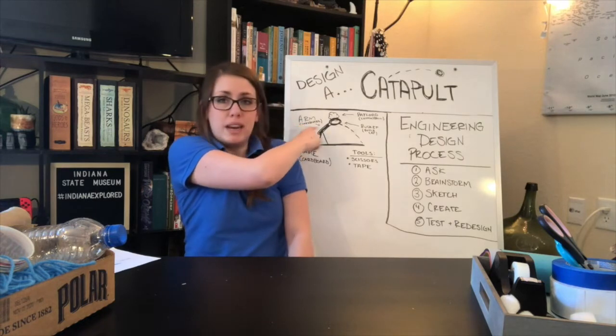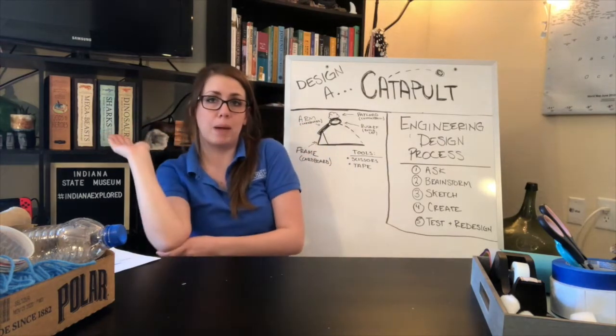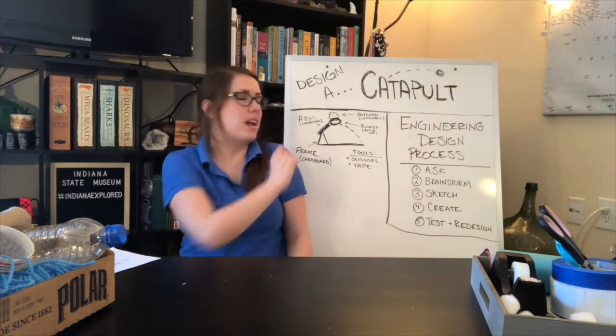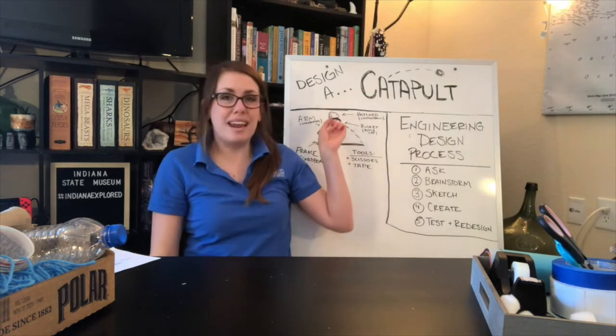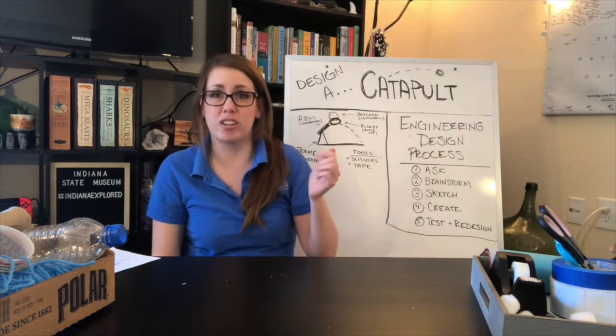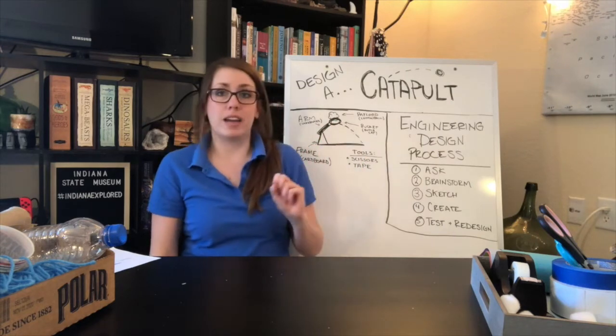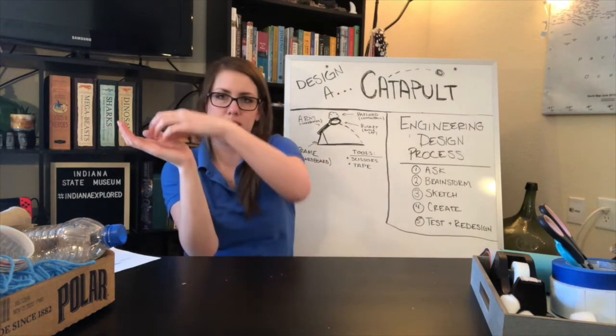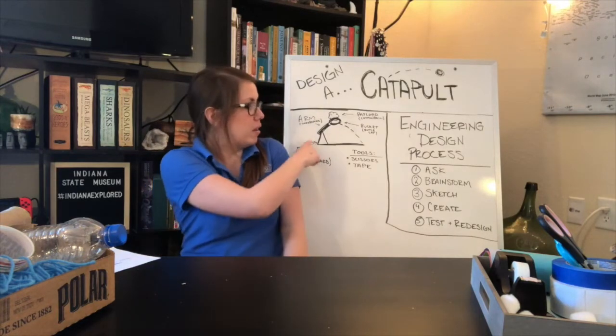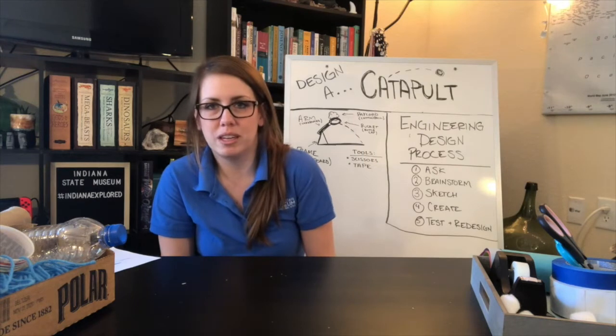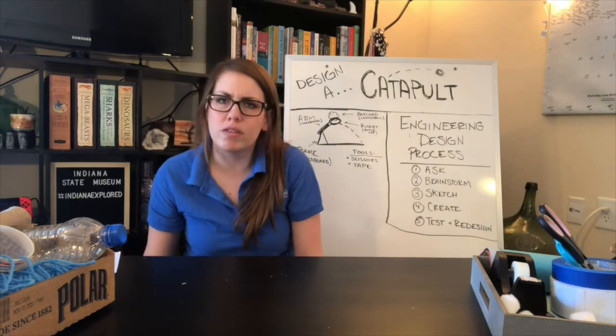And so I went through and I labeled the different parts. Like I'm going to want an arm to be able to pull back from my catapult. And I think I'm going to make that out of cardboard today. You also want to think about what your payload will be. That's the object that you're going to launch. I have my little cotton ball up here. You're going to want to think about the bucket, the place where the payload is set into. And I'm going to use a bottle cap for that. And then you want to think about the frame for your catapult. You could use something like a cup. I think I might use cardboard for mine today.